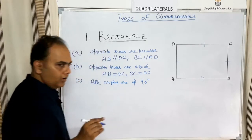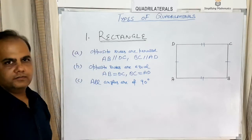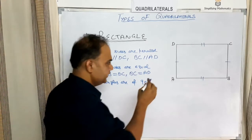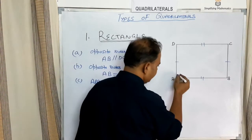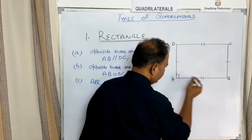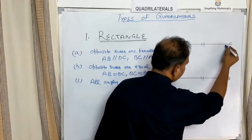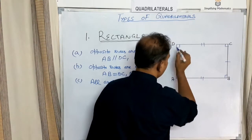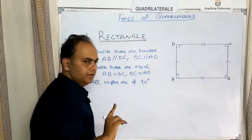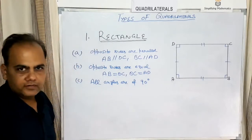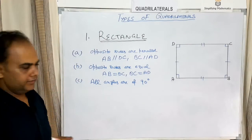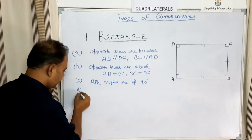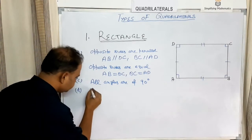The third property of a rectangle is that all angles are 90 degrees — angle A, angle B, angle C, and angle D are all 90 degrees.